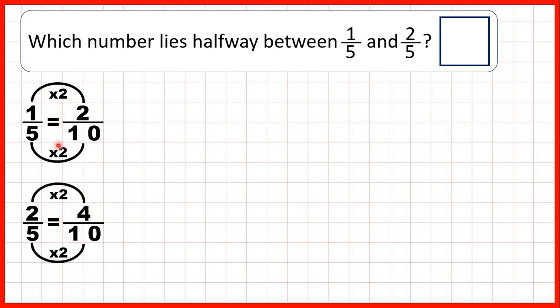So now that we know that one-fifth is the same as two-tenths and two-fifths is the same as four-tenths, we can see that the number right in the middle, the number that lies halfway between them, must be three-tenths.